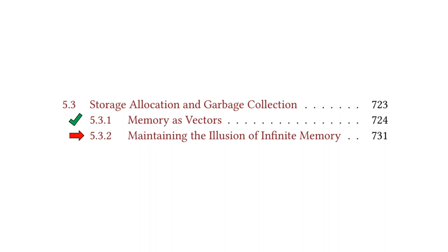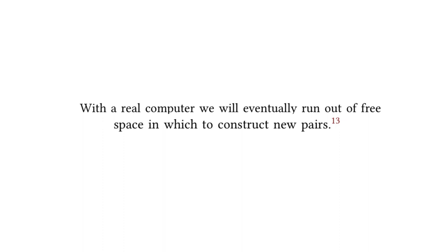That wraps up the first subsection, memory as vectors. This takes us to the final subsection 5.3.2, maintaining the illusion of infinite memory. We're going to go through this without looking at the implementation details — the last four to five pages look at a bunch of code with no corresponding exercises. Instead, we'll look at the interesting pieces, mostly in the footnotes, which are pretty interesting. The main summary of this subsection is that we maintain the illusion of infinite memory by using garbage collection or some adjacent language facility.